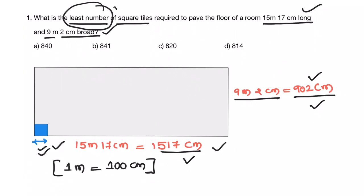And to have least number of square tiles, we need to have this common factor as highest. That is HCF, highest common factor. Then only I can have least number of square tiles.